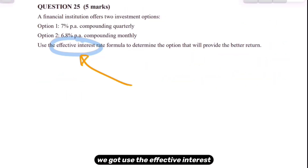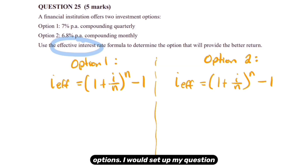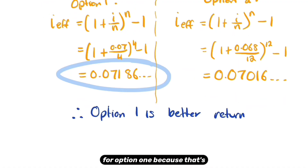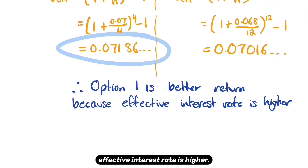The next question says to use the effective interest rate formula, so I'm going straight to that formula from the formula sheet. Because we're comparing two different options, I'd set up option one and option two. You just put in the interest rate as a decimal divided by the compounding period. Option one gives a higher effective rate, so that gives the better return. If this were a loan instead of an investment, you'd want the lower rate. Therefore option one is the better return because its effective interest rate is higher.